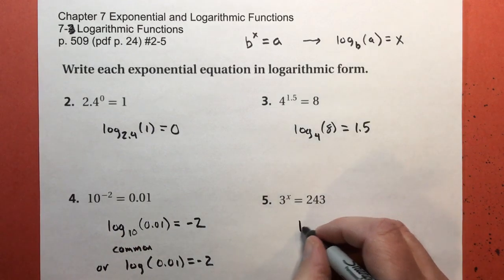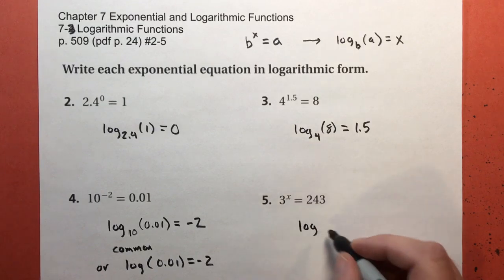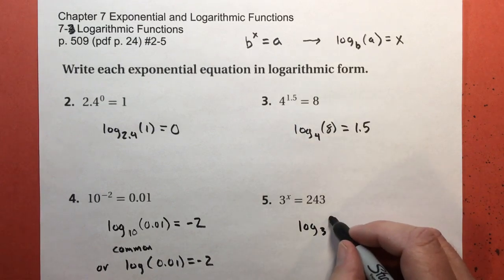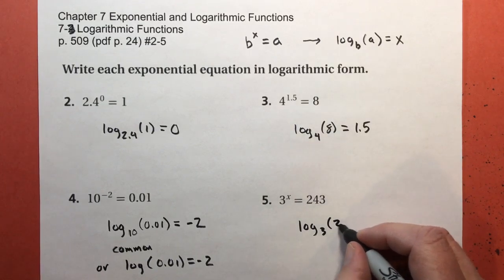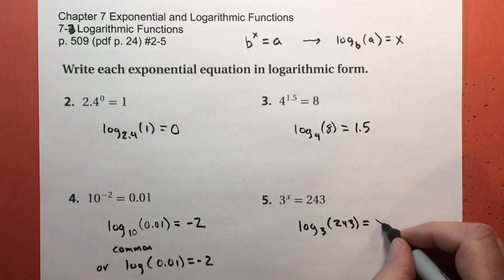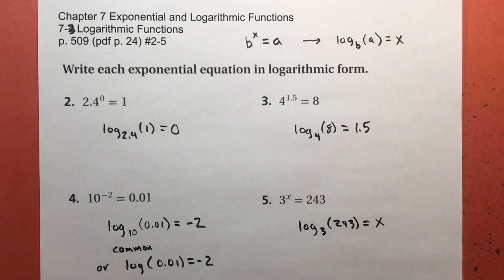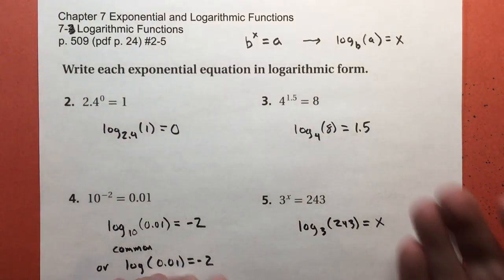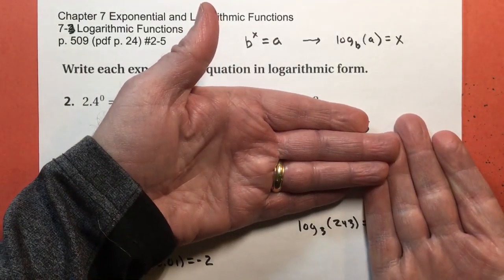Number five. My base of my exponent is 3. My output for the exponential is 243. Of course, the logarithm equals the exponent, which in this case is the unknown x. Now that's where we're done. That's all you have to do. I'm just going to go a little bit further with that last one.